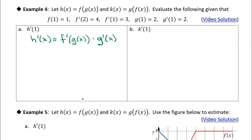Now if we want h'(1), all we need to do is replace the x with 1 and then use the values that we're given. We have f'(g(1)) times g'(1).